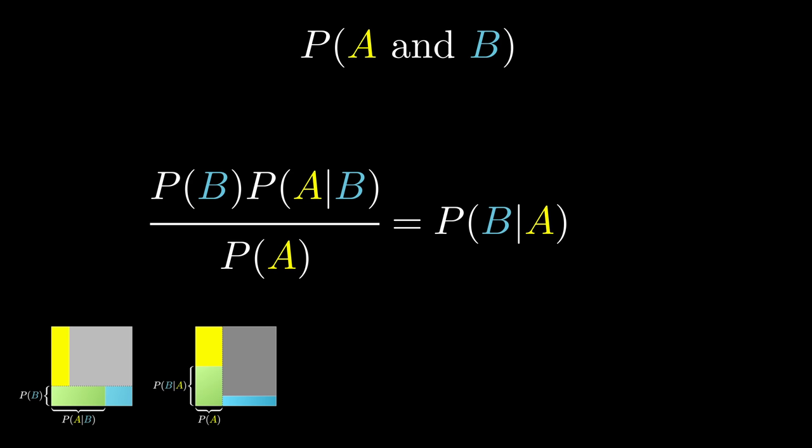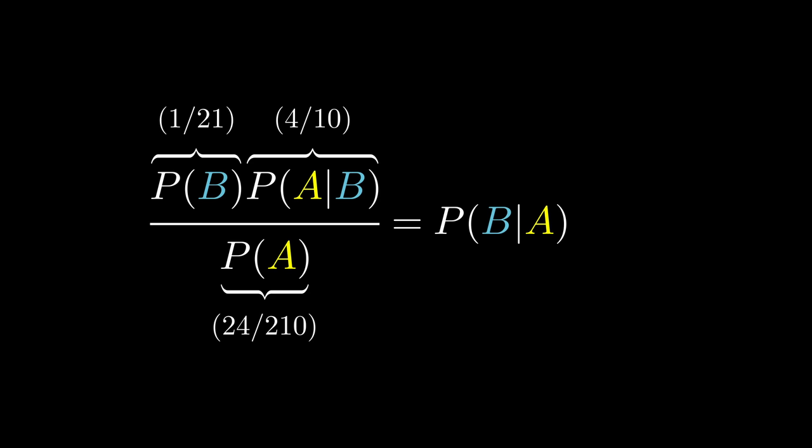So when one of these conditions is easier to put numbers to than the other, say when it's easier to think about the probability of seeing some evidence given a hypothesis rather than the other way around, this simple identity becomes a useful tool.